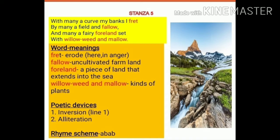'And many a fairy fall and set' — when it's passing, it's passing towards beautiful places that seem like a fairy place. And fallow land is a piece of land that extends into the sea. 'With willow, weed and mallow' — willow and weed are kinds of shrubs, and mallow are plants with hairy stems and leaves that have pink, white or purple flowers.